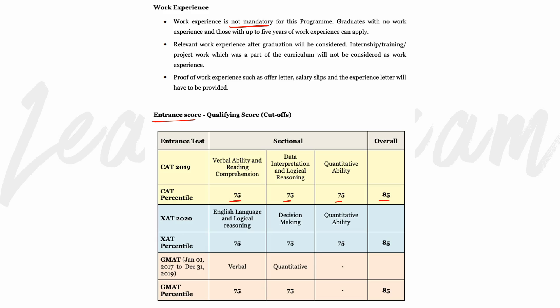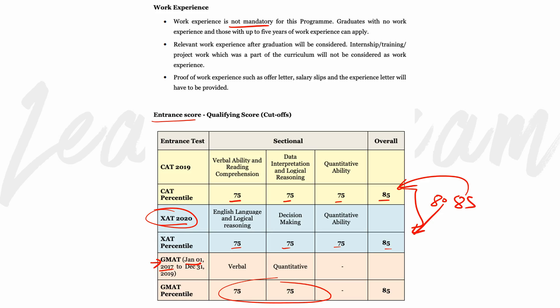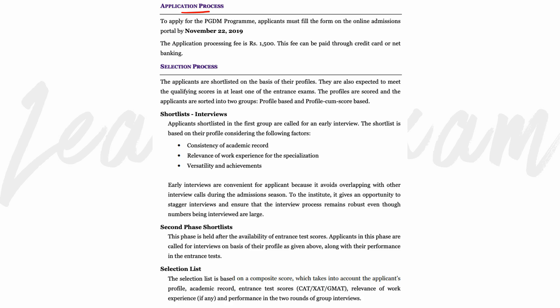With achievements and extracurricular activities, you will get additional help in the application. The recommended profile is 75-75-75-85 — this is a recent change from the earlier 80-85 benchmark. If you apply below these requirements, you won't be considered eligible. The overall CAT score required is around 650, so that is good for SPJAIN. The application process closes on 22nd November, and the CAT exam is the qualifying exam.